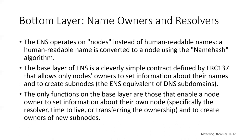The ENS operates on nodes instead of human-readable names. A human-readable name is converted to a node using the name hash algorithm. The base layer of ENS is a simple contract — less than 50 lines of code, defined by ERC-137 — that allows only node owners to set information about their names and to create sub-nodes, which is the ENS equivalent of DNS subdomains. The only functions of the base layer are to enable a node owner to set information such as the resolver, time to live, and owner transfer, as well as to create owners of new sub-nodes.